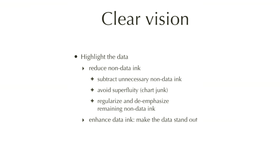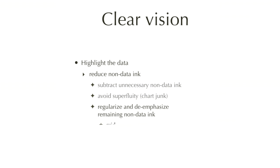Reducing non-data ink also involves regularizing and de-emphasizing remaining non-data ink. The important parts are looking at a grid — if you put it on your graph, whether you really need it — and looking at the stuff that is in your data rectangle where the data resides, and surrounding that is what is called the scale line rectangle, which contains the axis, axis labels, ticks, etc.